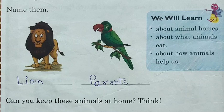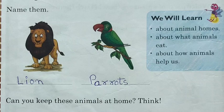Can you see in the blue box there are three points? In this chapter, students, we are going to learn about these three points in detail. Point number one is about animal houses — we will learn about the homes of different animals. Point number two is about what animals eat. Point number three is about how animals help us. All three points we are going to study in this chapter in detail.